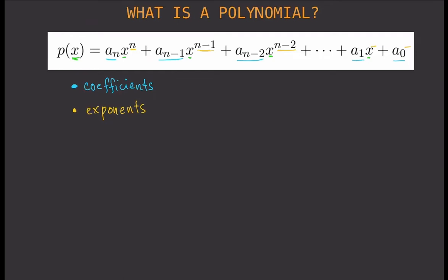The exponents should be positive whole numbers — but that could include zero too. So zero is not positive, but you can include zero in that case. So: positive whole numbers including zero.